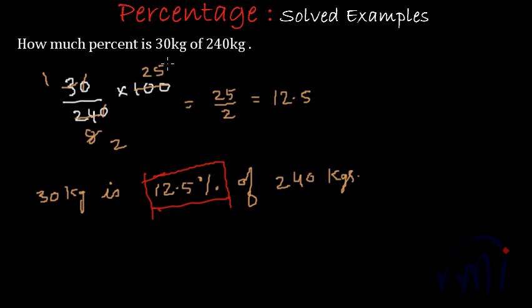And how we have done it? First we have found how much fraction is this 30 kg of 240 kgs. To do that we have done 30 by 240. This will be the fractional value of 30 with respect to 240 and then to convert this fraction into percent I have multiplied by 100, then if we simplify we get this 12.5%.